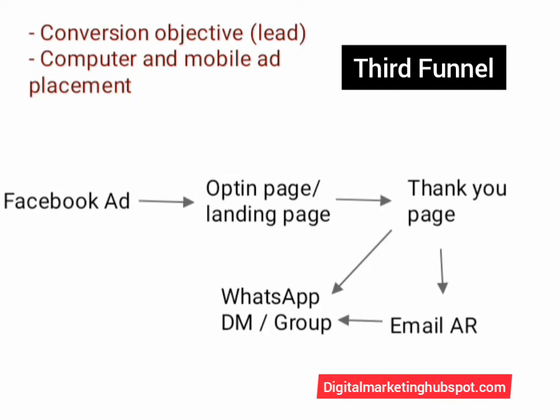You can also use the Facebook Lead Generation form as a replacement for your opt-in page in this funnel. If you do that, you need to link your autoresponder to your Facebook Lead Generation form. Some autoresponders are compatible with Facebook — you can link them so that as soon as someone fills in their data on Facebook, it is sent to the autoresponder, and they are also redirected to a thank you page, then from the thank you page to your WhatsApp.